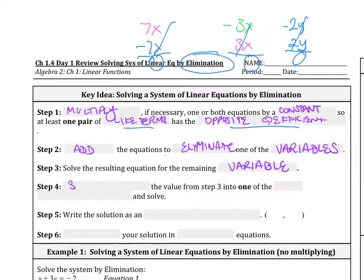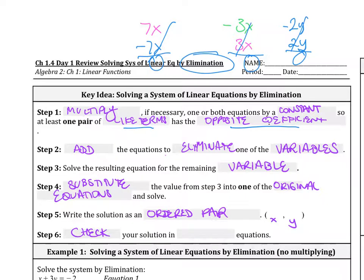Then step 4, you substitute whatever you found - substitute the value from step 3 into one of the original equations and solve. You're going to write the solution as an ordered pair. Remember that the x's go first and the y's go second. And then step 6, you should check your solution in both equations.